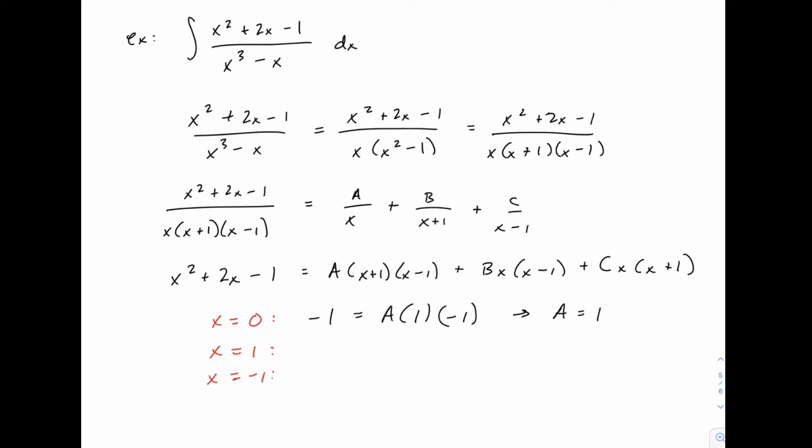When we plug in 1, the left side gives us 1 squared plus 2 minus 1, or 2. And then on the right side, the terms that have an x minus 1 factor will be canceled off. So the A and the B terms are going to disappear, just leaving C times 1 times 2. So 2 equals 2C, or C equals 1.